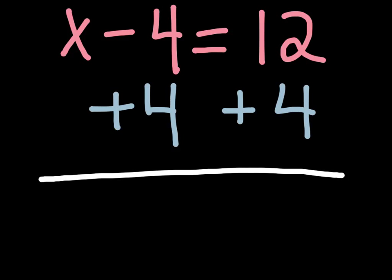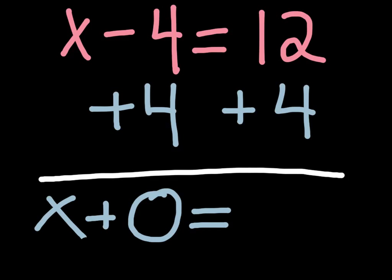So, on the left side, minus 4 plus 4, that equals 0. I'm going to break down my equal sign and I will include my x over here.